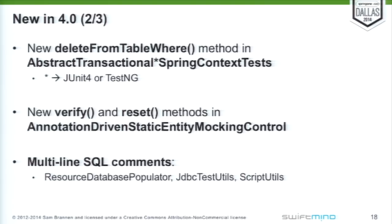In the Spring test context we have some abstract base classes you can extend — AbstractTransactionalJUnit4SpringContextTests and AbstractTransactionalTestNGSpringContextTests. If you extend from these, you have some convenience methods like countRowsInTable, delete, dropTables, et cetera. In 4.0 we added a new one: deleteFromTableWhere, so you can add a where clause.